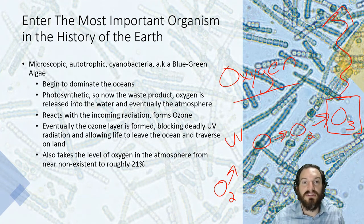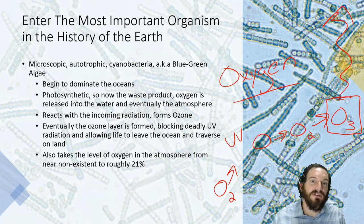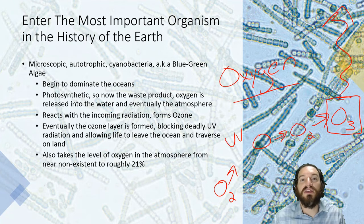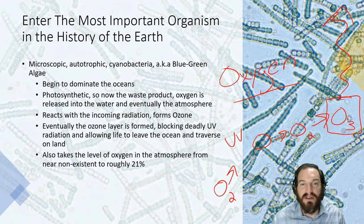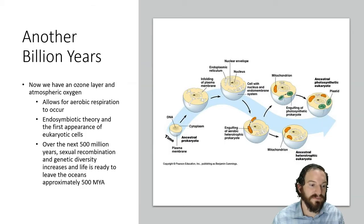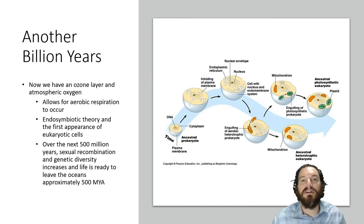Why do I consider cyanobacteria the most important organism in the history of the earth? Because it took the earth's atmosphere from zero parts per million oxygen up to about 21% oxygen. That is incredible — it has had the biggest impact on the atmosphere of the earth. Yes, humans have had a very big impact, but nothing compared to the impact cyanobacteria have had.